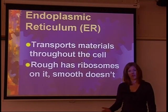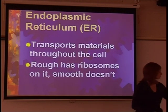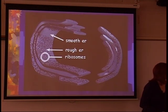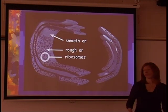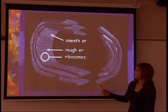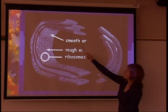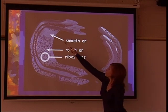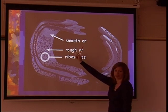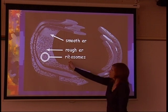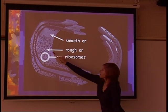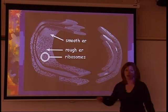But they really have the same functions. This is just showing some endoplasmic reticulum. Up here is the smooth, where there's no little black dots on it, which represent ribosomes. And then the rough ER has the ribosomes on it.